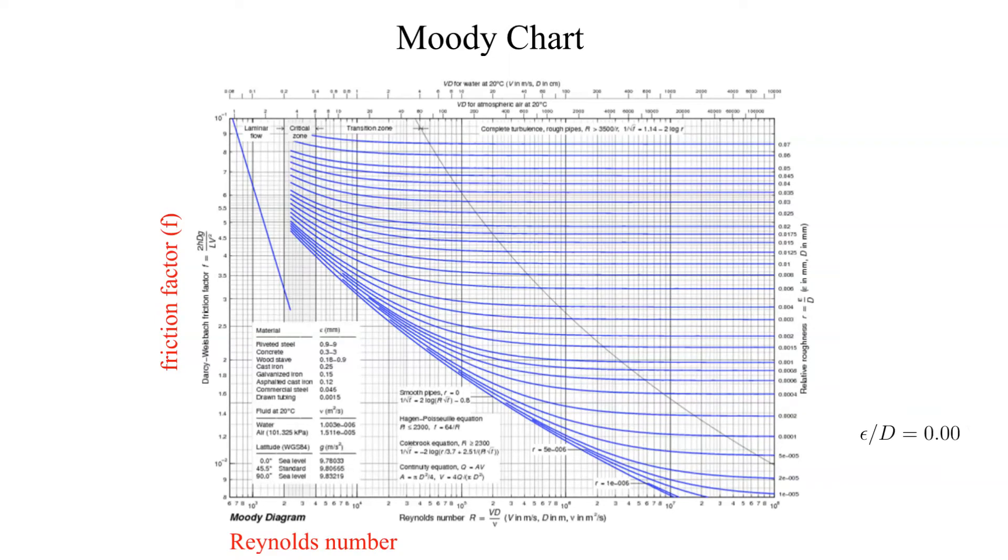The approximate value of our relative roughness is noted on the right hand side. To find the friction factor, we trace our relative roughness curve until we reach our Reynolds number. The approximate location of our Reynolds number is indicated here with a red dashed line. The intersection of the relative roughness curve and the Reynolds number specifies the friction factor which we read from the ordinate axis. With the calibrated eye, I read that the friction factor is equal to 0.017.